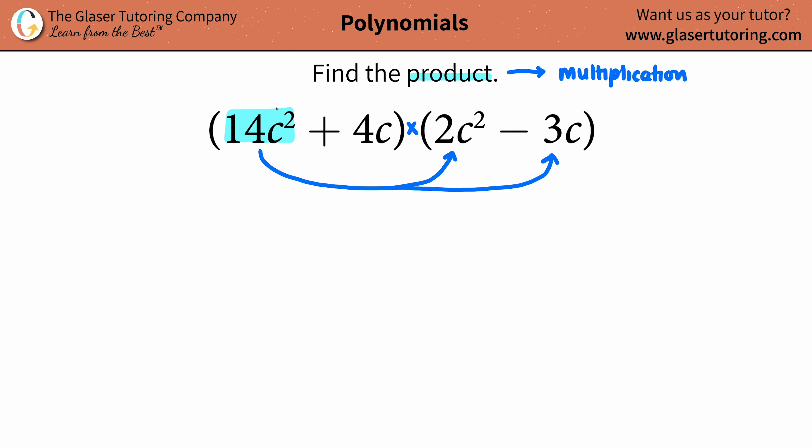Let's do the multiplication. Multiplying numbers is the same as you would all throughout algebra. So we have 14 times 2. We'll do the first term here, 14c² times 2c². 14 times 2 is 28, so we got 28.